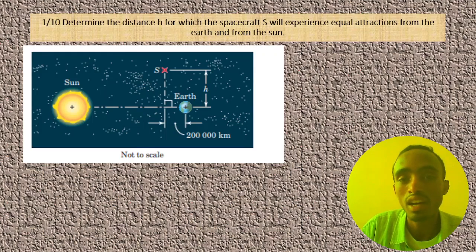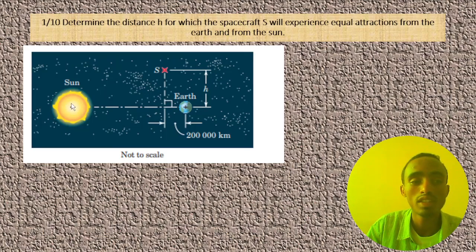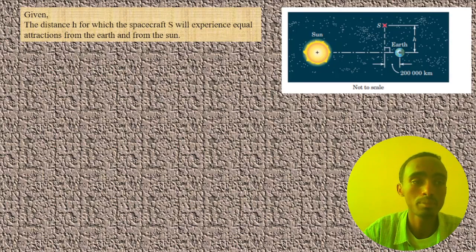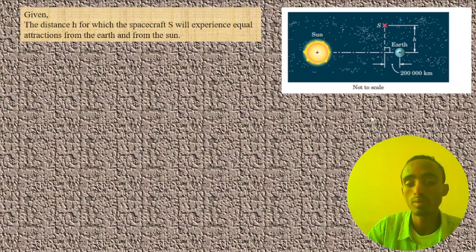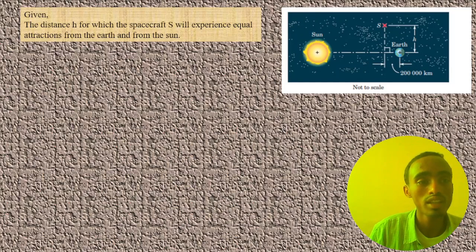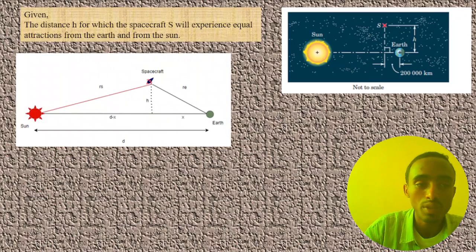We need to determine H when the force of attraction between the Earth and the spacecraft equals the force of attraction between the Sun and the spacecraft. To solve this problem we can use different mathematical methods and concepts to get the answer. Let's go through a single problem-solving mechanism step by step. First, we draw the free body diagram of this question.